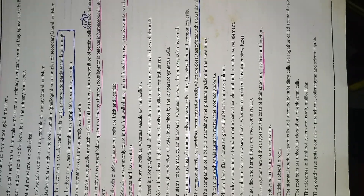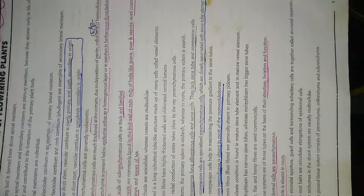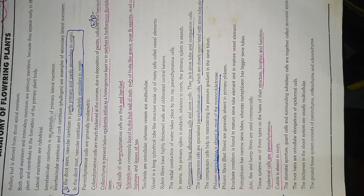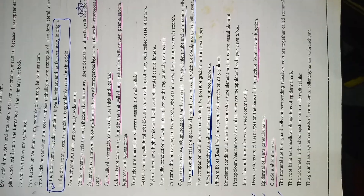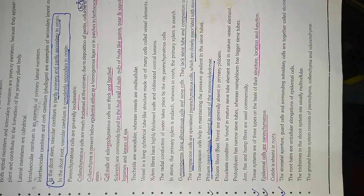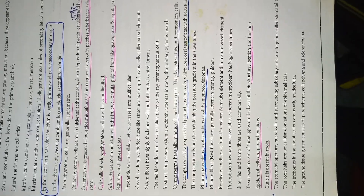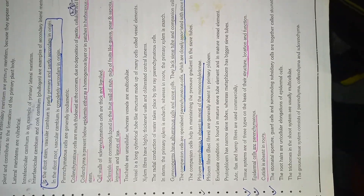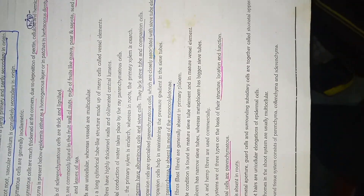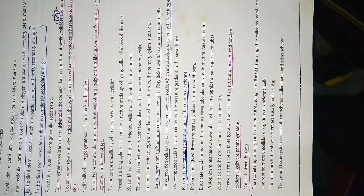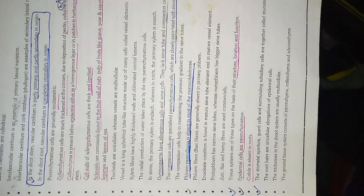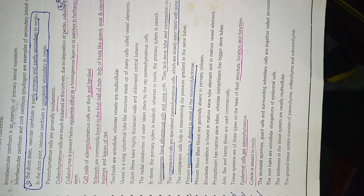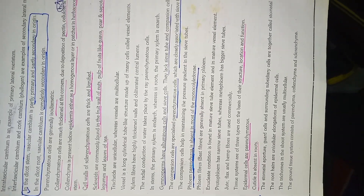Scleroids are found in fruits like guava, pears, and sapota, seed coats of legumes, and leaves of tea. Tracheids are unicellular while vessels are multicellular. Vessels are long cylindrical tube-like structures made of cells called vessel elements. Xylem fibers have highly thick walls and are obliterated at the centers. In legumes, radial conduction of water takes place by the ray parenchyma cells. In stems, the primary xylem is endarch, while in roots it is exarch.